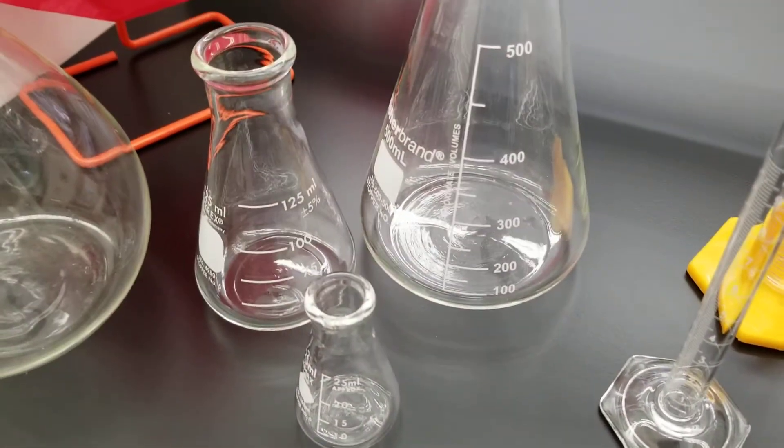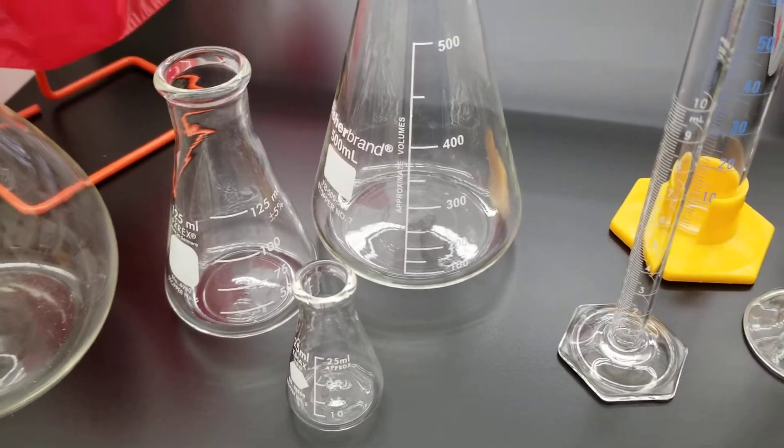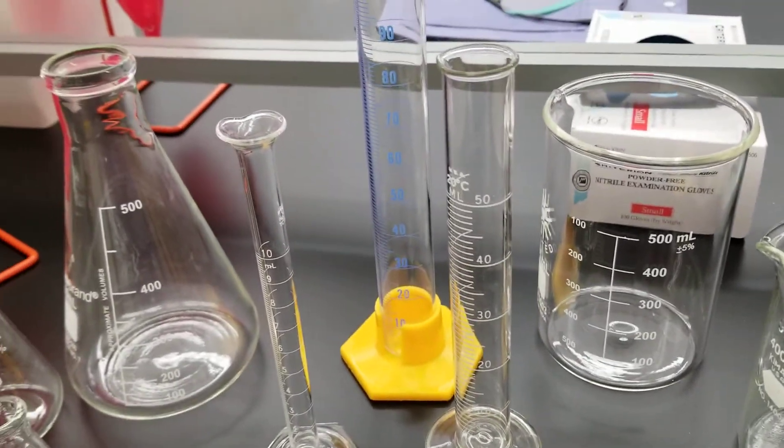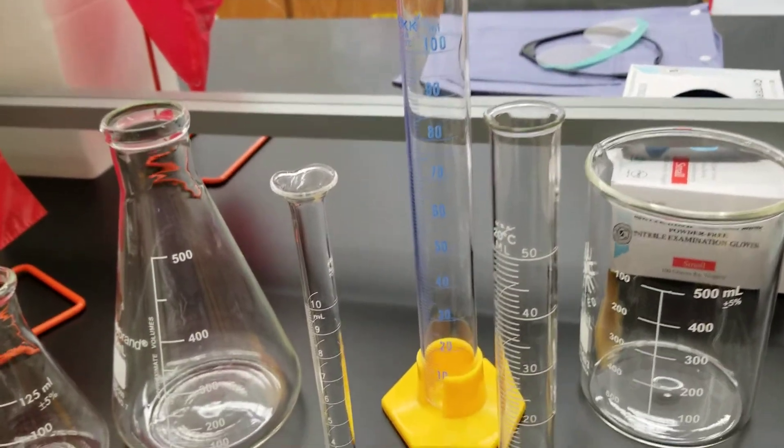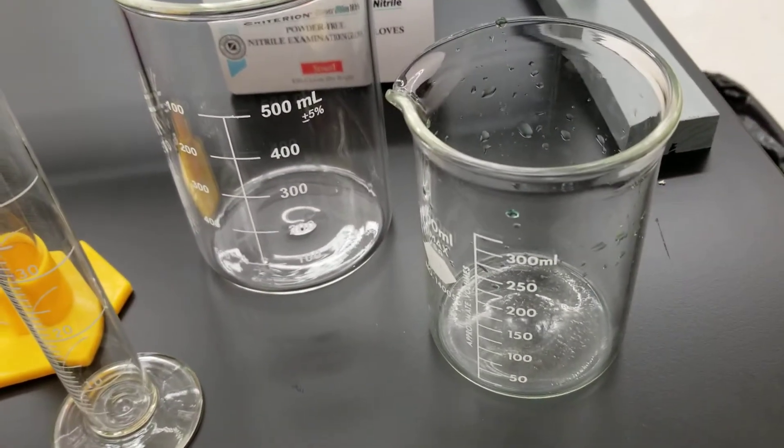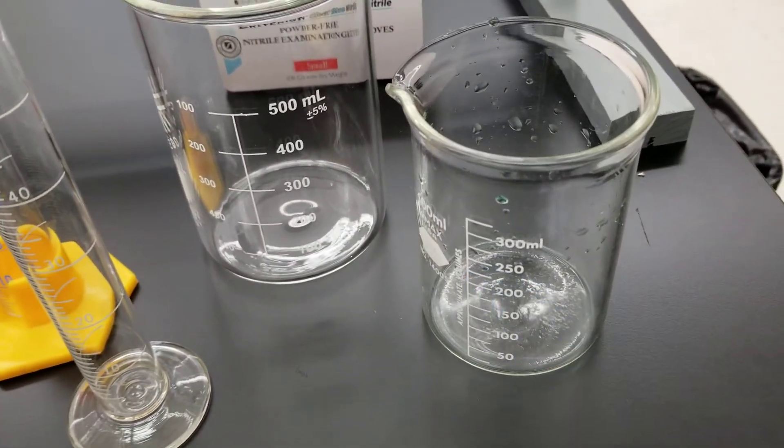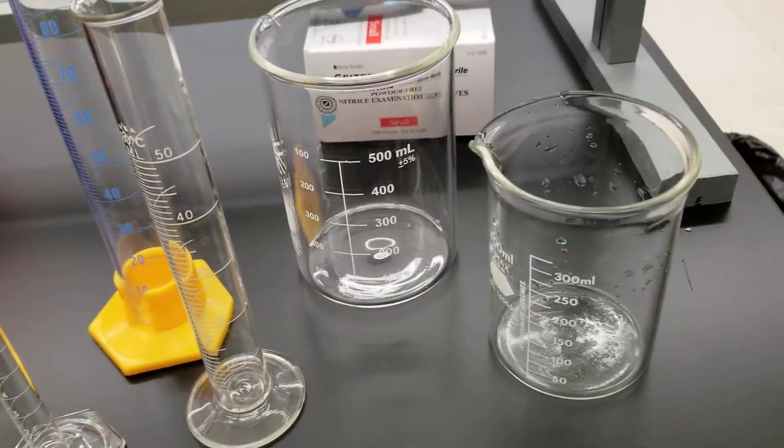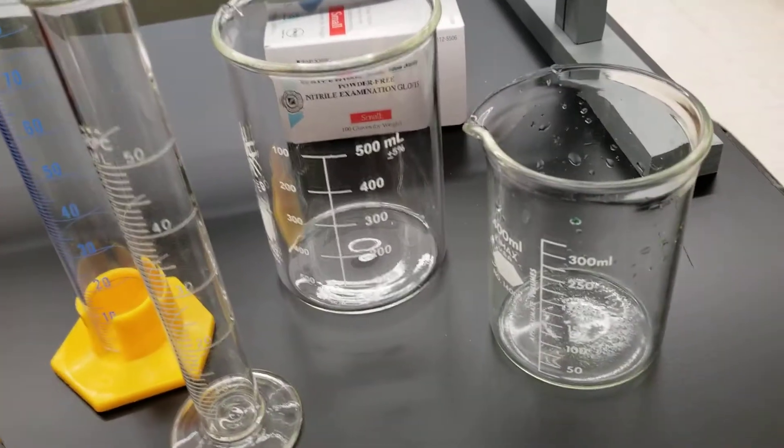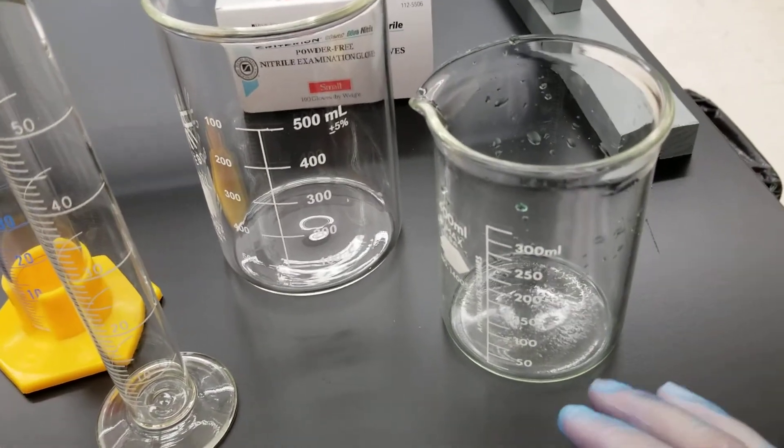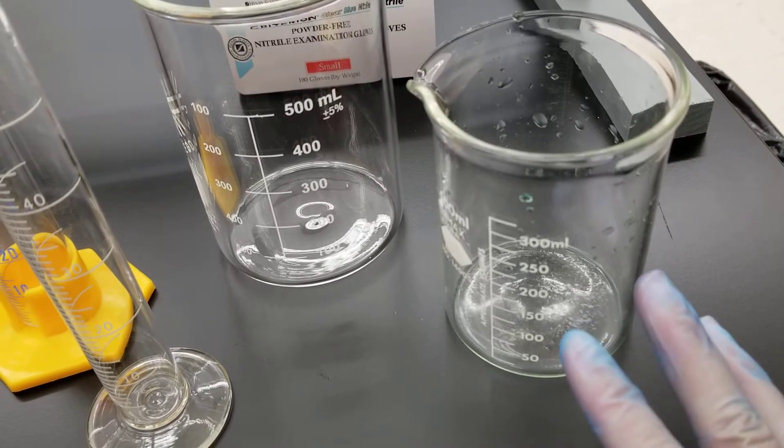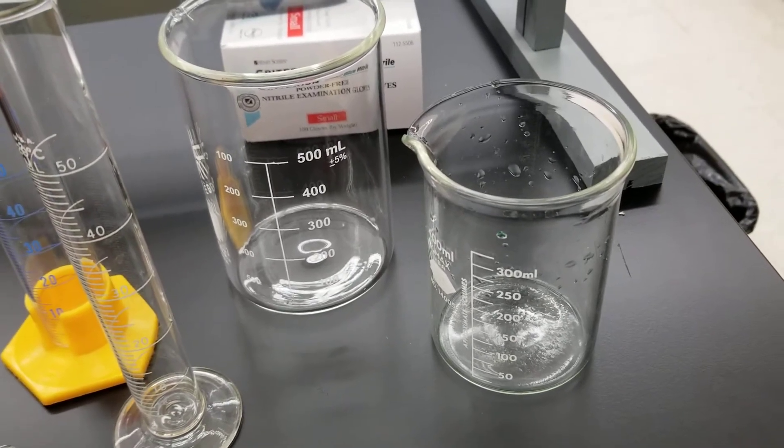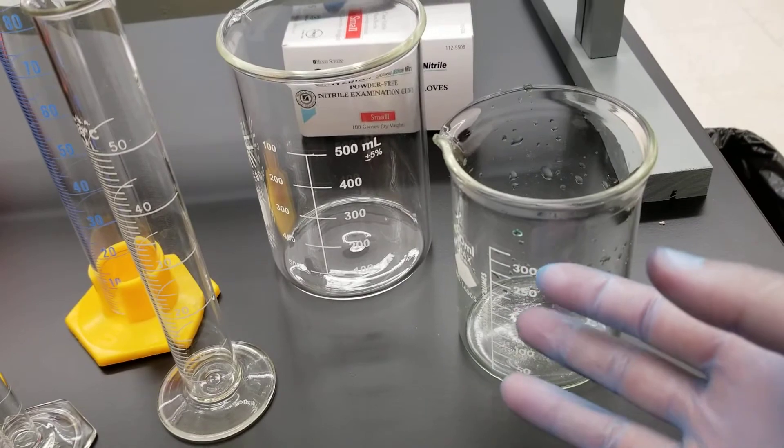So this is an Erlenmeyer flask. These are Erlenmeyer flasks, and we have ranging varieties there of the amount of volume. These are graduated cylinders here in the middle. We have a variety of volumes there, and these are two beakers. This one I've been using in some videos, that's why it's got some green water in there. These are not very accurate, and you wouldn't really use them for anything other than holding something that you might be taking from. So like I did with the green water, you could put something that you're going to need to take from making accurate measurements using maybe a pipette. You could just store a large amount of fluid in there for that.